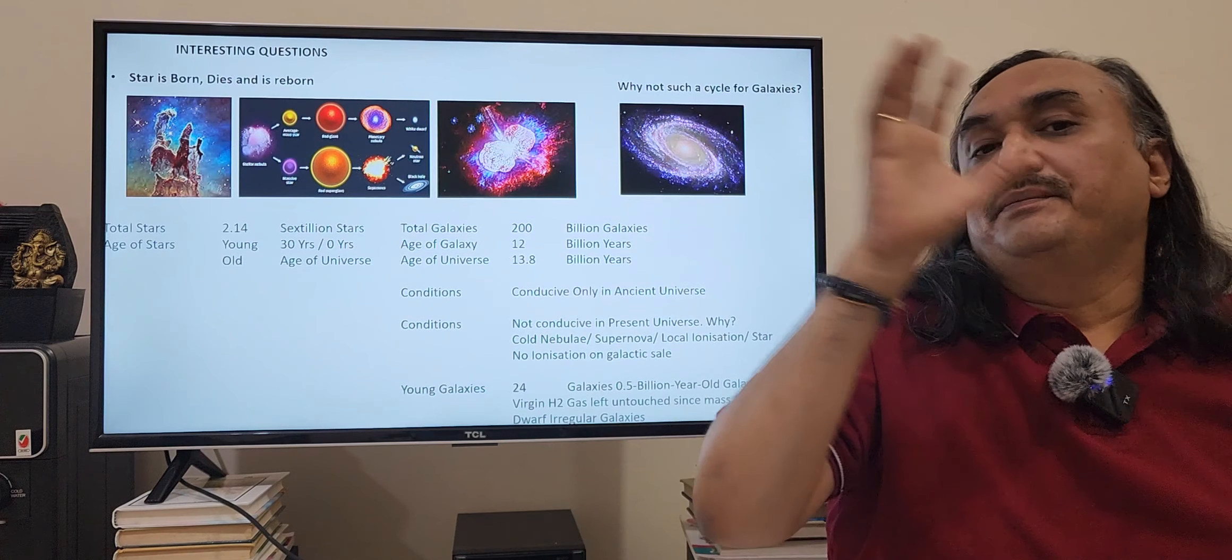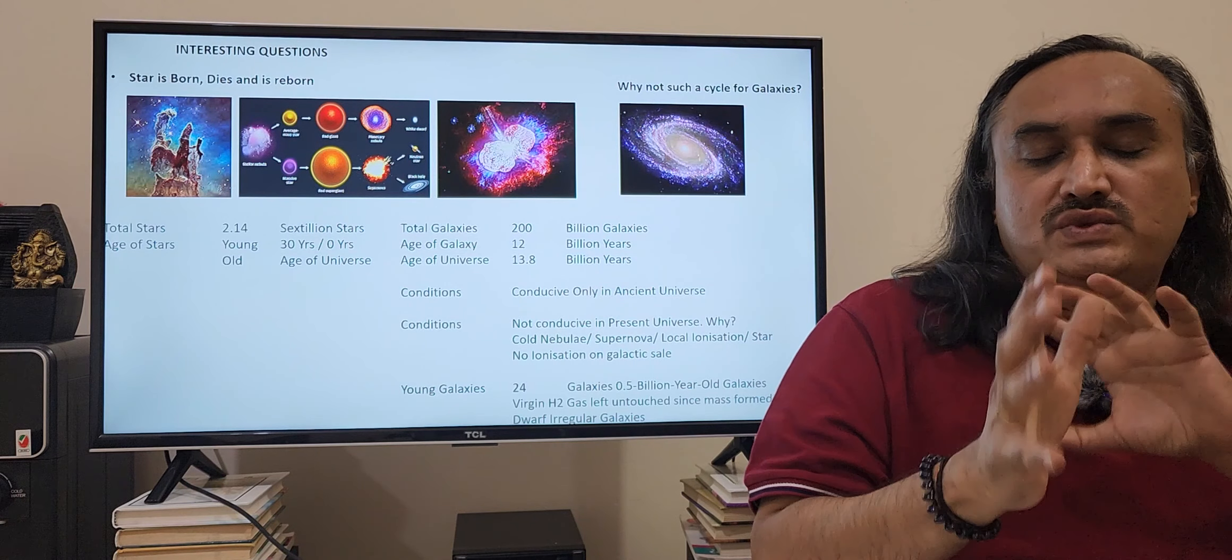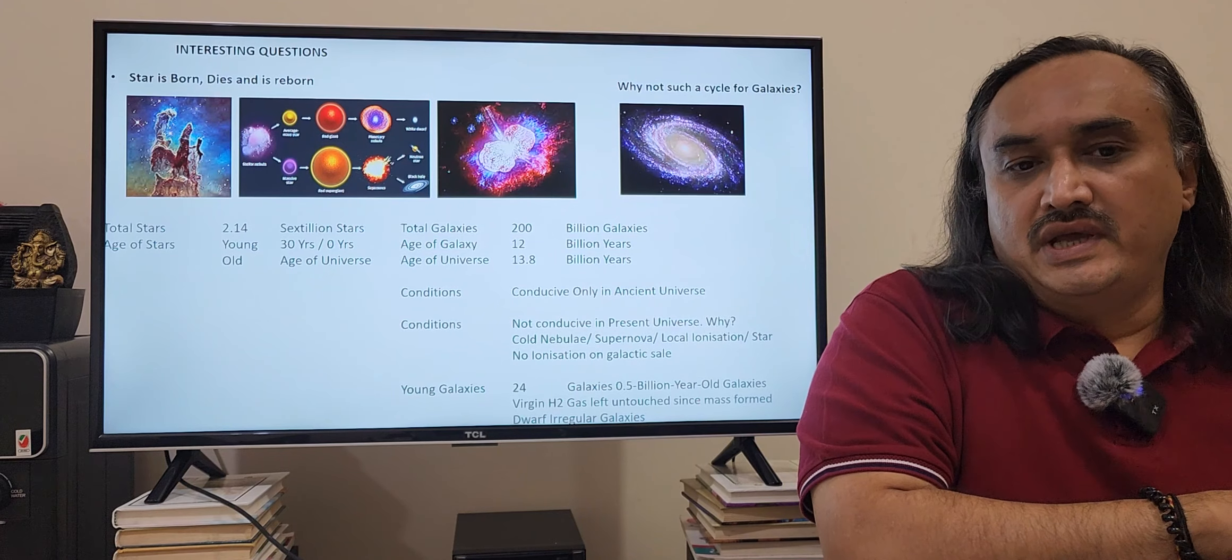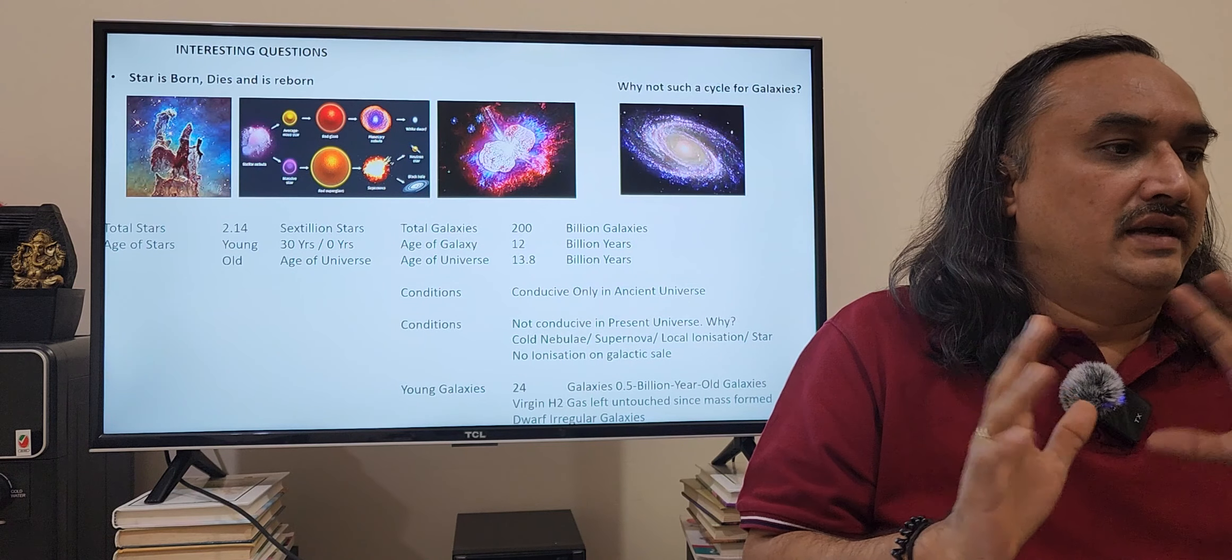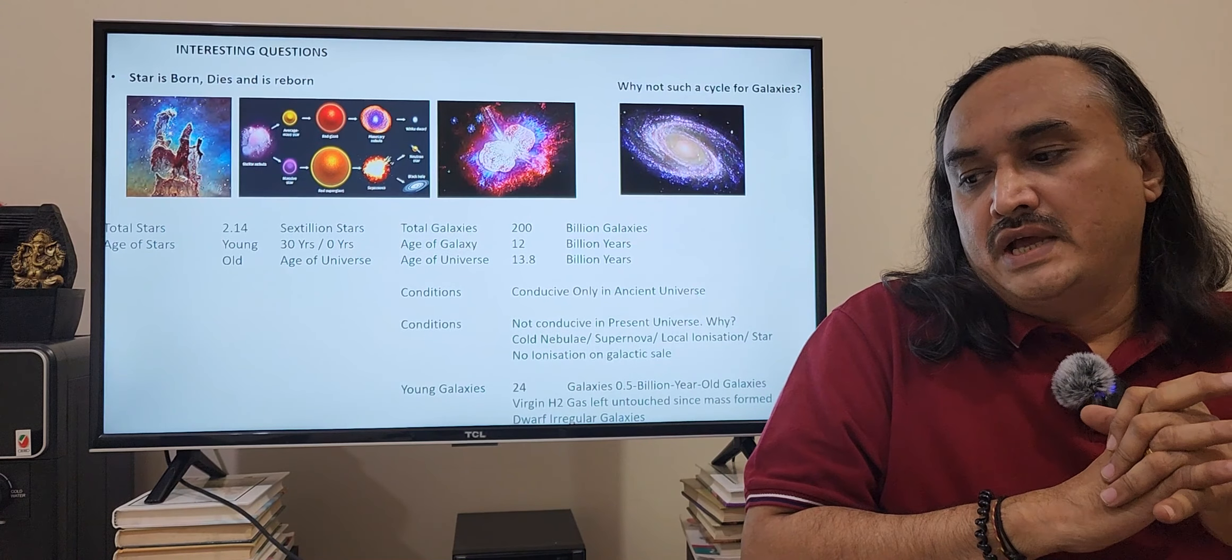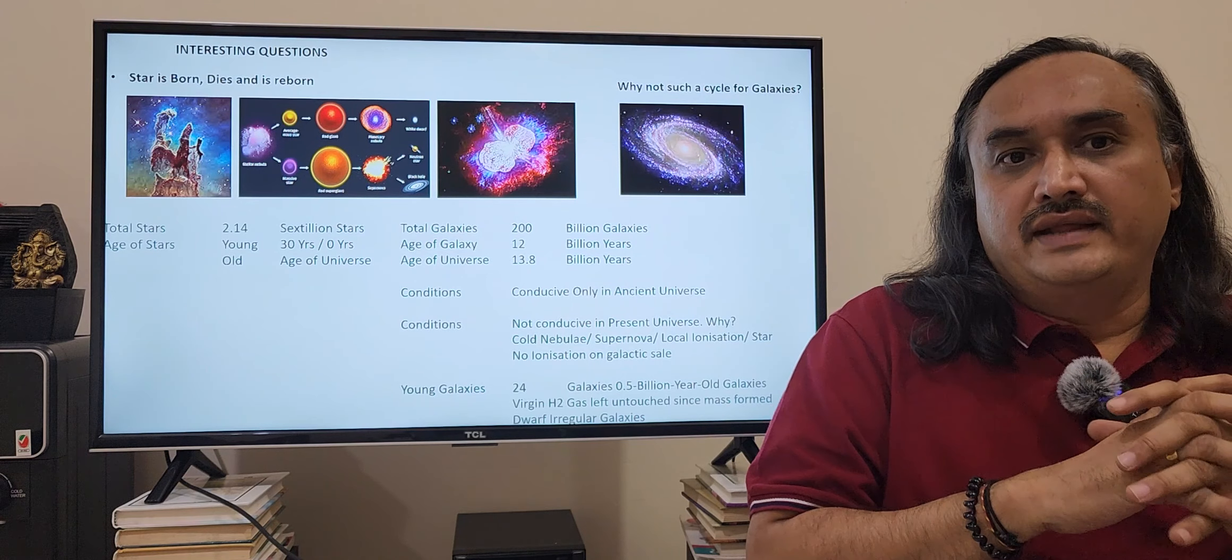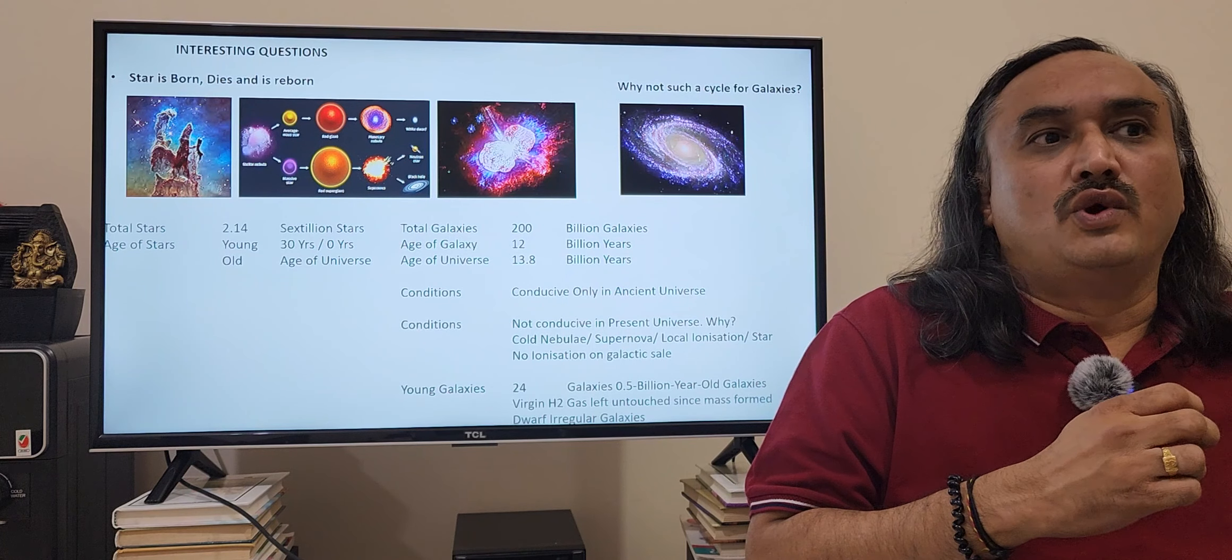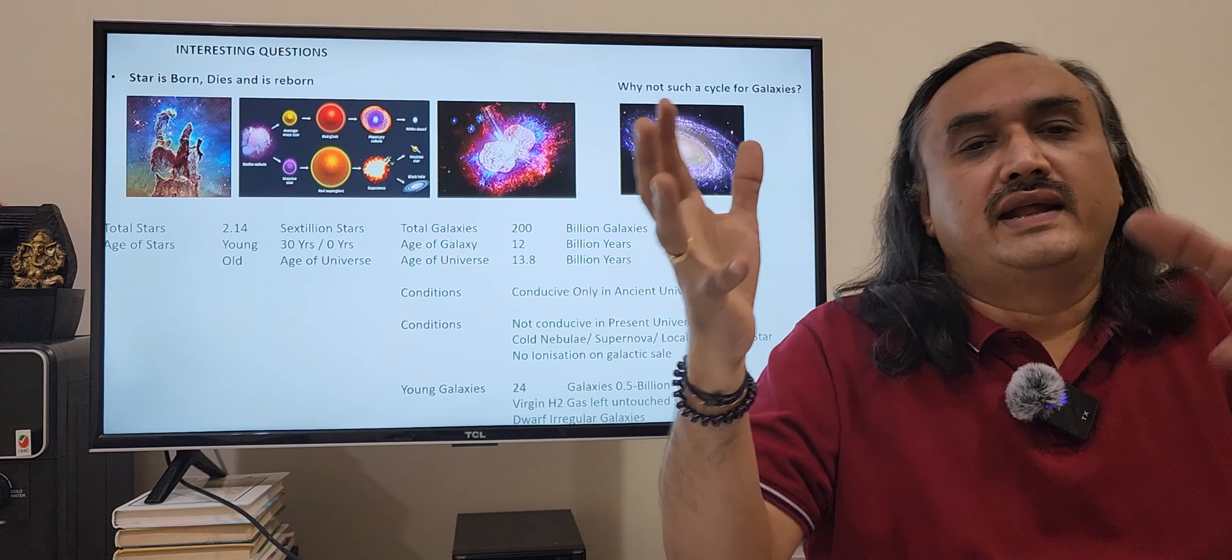There is no possibility of a new galaxy forming. Why? This would suggest that the conditions were conducive only in ancient universe for galaxy formation and they are not conducive in the present. In the alternate model of universe suggested by Manthan, it all starts with ionization formation and you have to have 10,000 kelvin. The compressed universe was able to have 10,000 kelvin, and supernovae also had 10,000 kelvin even in the contemporary universe.